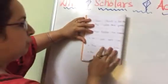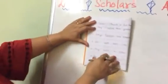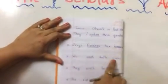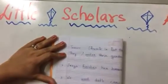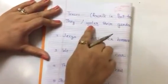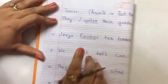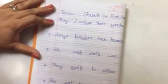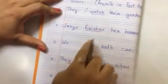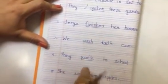What we have to do is we have to write these sentences in past tense. So whatever action words — verbs — are underlined, you have to change them in past tense.